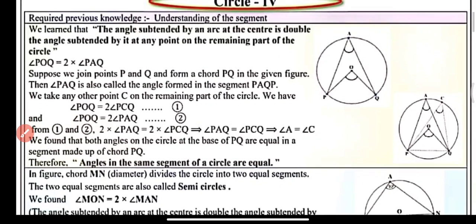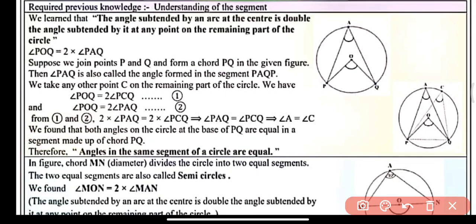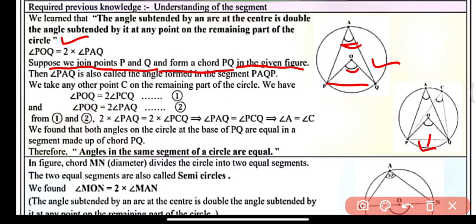So now here we have a circle on the screen with center O. Angle POQ will be double of angle PAQ — so POQ will be twice of angle PAQ. So POQ ka double hoga PAQ ka. Suppose we join P and Q; on joining P and Q you can see this shape here, forming chord PQ in the given figure.